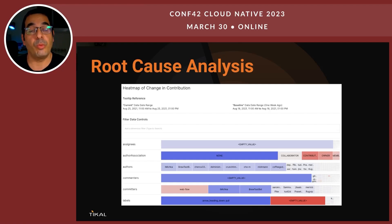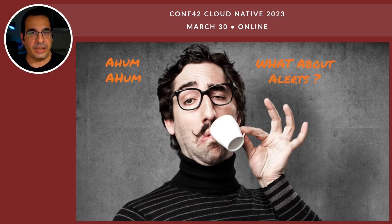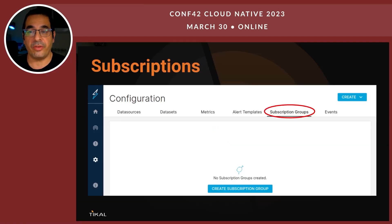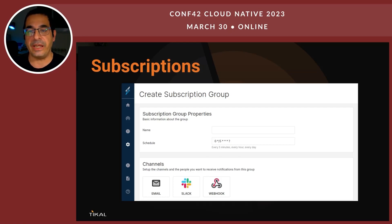What about alerts? Any company has its own alerting system. How can you integrate anomaly detections with your alerting system? There is a possibility to create a subscription group in ThirdEye. The available channels are email, Slack, and there is also an option for webhook, so we can definitely integrate ThirdEye anomalies with our alerting system.